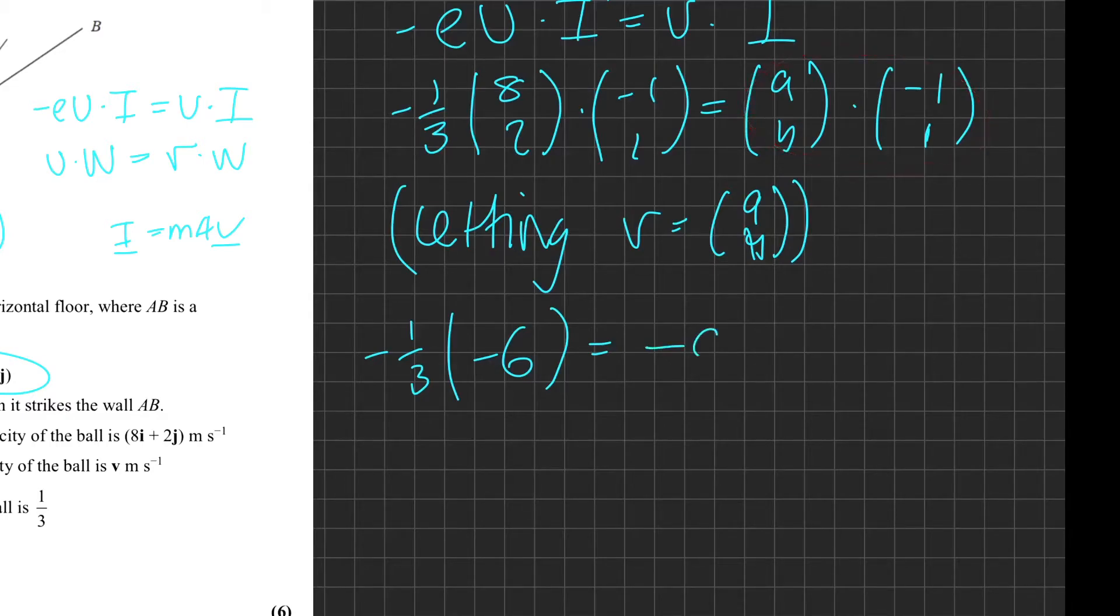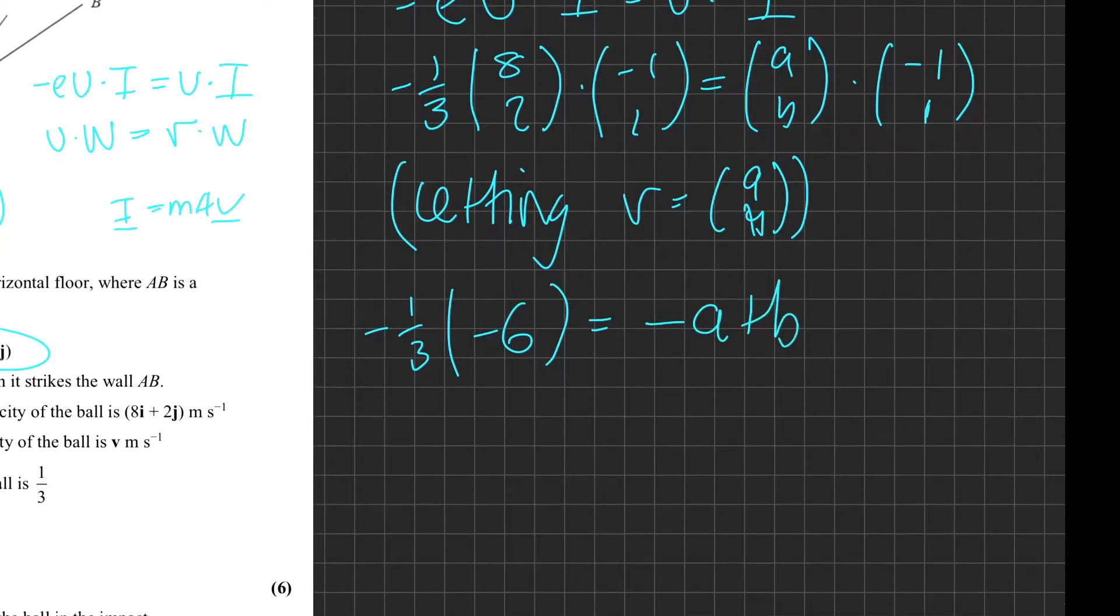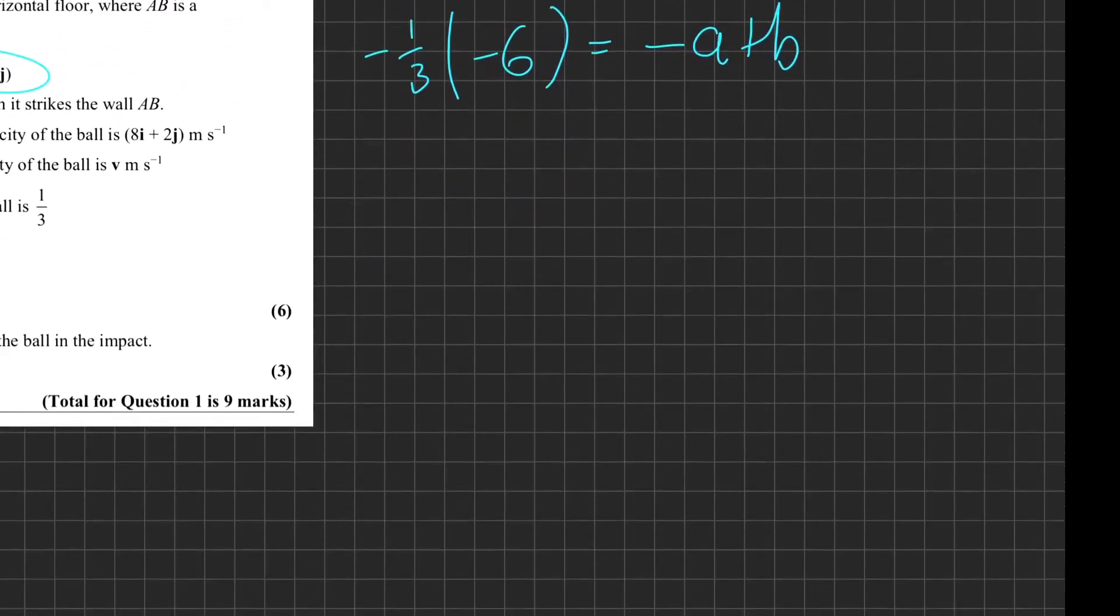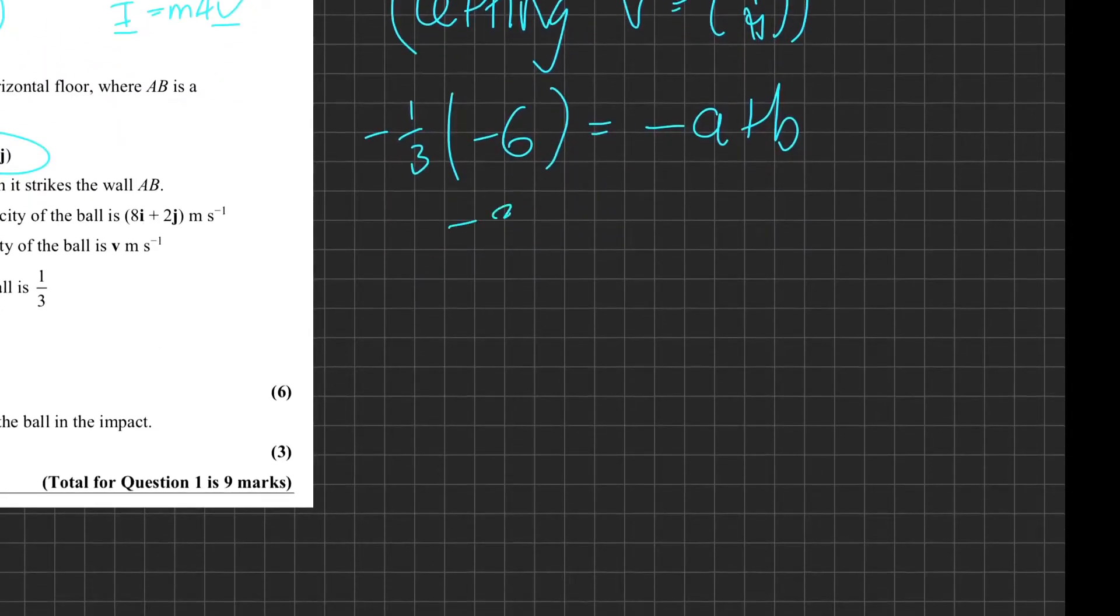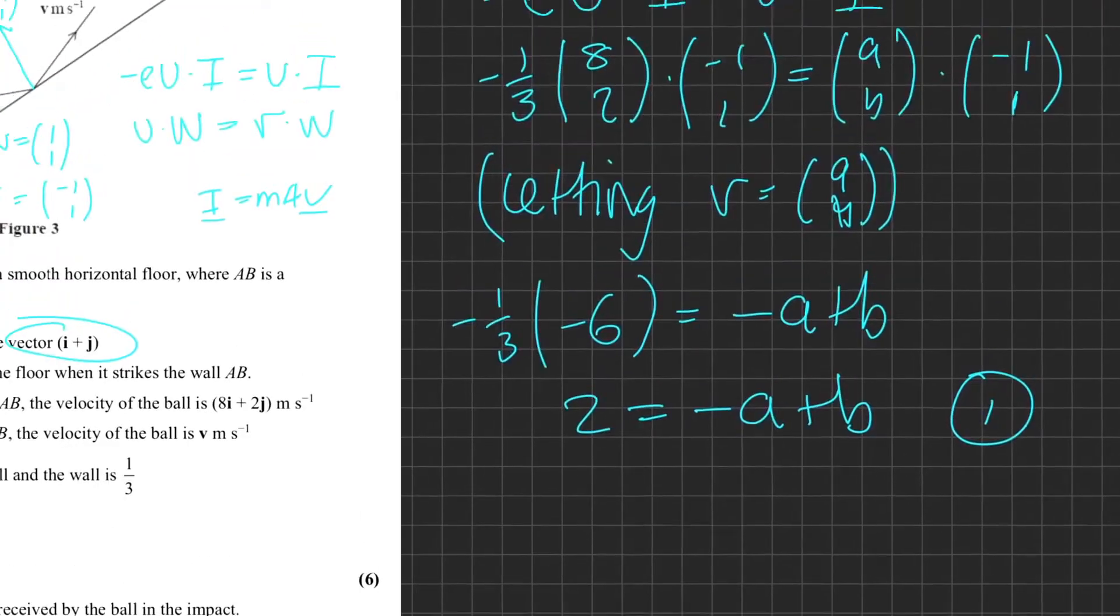And what do we get here when we dot product these? We get -a + b. So this is what we get so far. Then what we can do is just times those out to get positive 2 = -a + b. This is our first equation. However, we can't solve it because we have two unknowns and only one equation.